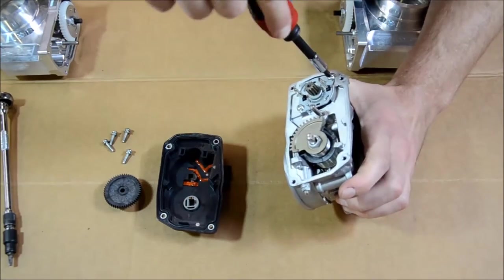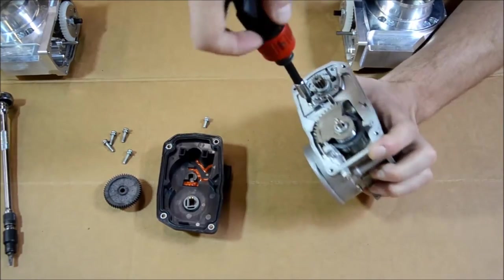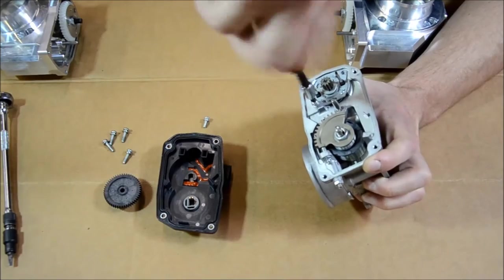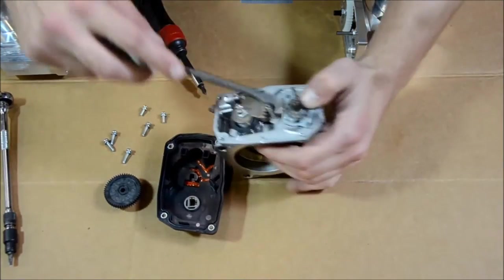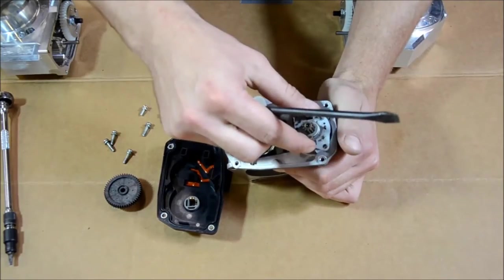Using the Phillips screwdriver, remove the two screws holding the electric motor. Pry very gently, being careful not to bend anything with a flathead screwdriver, to remove the electric motor from the housing.